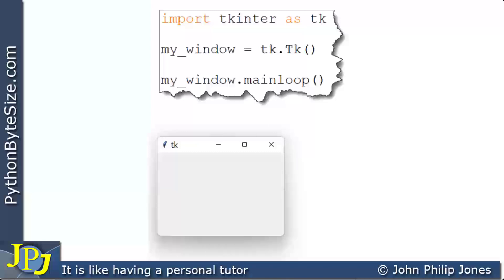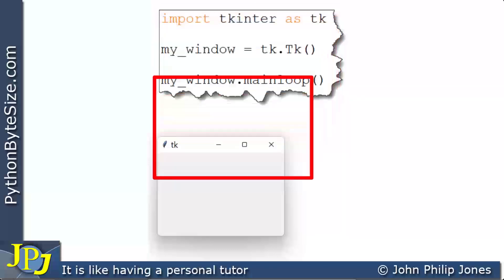What I'd like to point out now I've resized it, you can see this title comes into view, which is TK, and these are the defaults that you get when you use TKinter. But what you can see with these three lines of code, you get a fully functioning window, as you can see here.